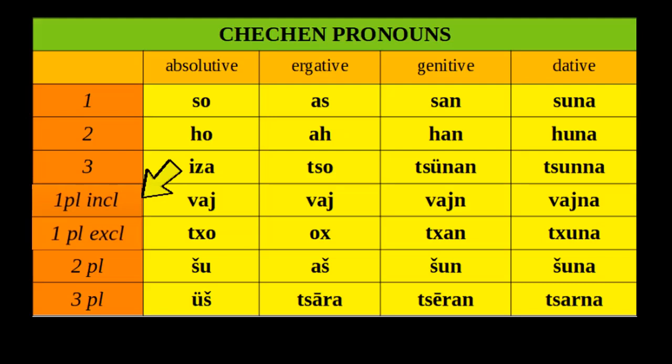That inclusive/exclusive distinction is not common in Europe or Western Asia — it's found mostly in Native American languages, both North and South American. The first person exclusive means you're talking about yourself and your group while excluding the person you're speaking to, whereas the first person inclusive includes the person you're talking to. So if you say 'let's get out of here' with the exclusive pronoun, it means only we here — not you who are listening — are going to leave.